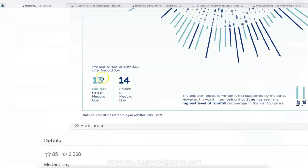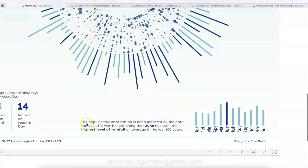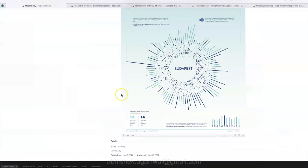So that's a quite interesting visualization, which I really liked and I thought I will share with you. Also down below, some legend, which is average number of rain days after Medard Day, 13 days it did not rain on Medard, and 14 is rain on Medard Day. So average number of rainy days after Medard Day is what it is indicating. Then, this is a conclusion.